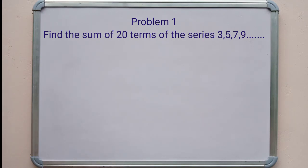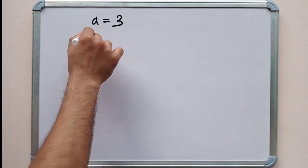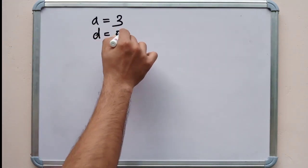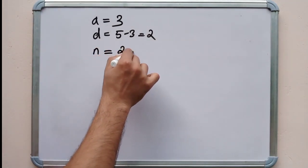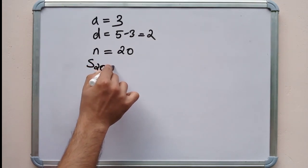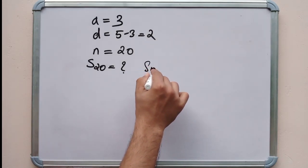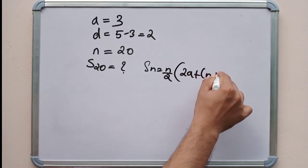Find the sum of 20 terms of the series. Here A equals 3, D equals 5 minus 3 equals 2, and N equals 20. We want the sum of these 20 terms. Sn equals N by 2 into (2A plus (N minus 1) into D).